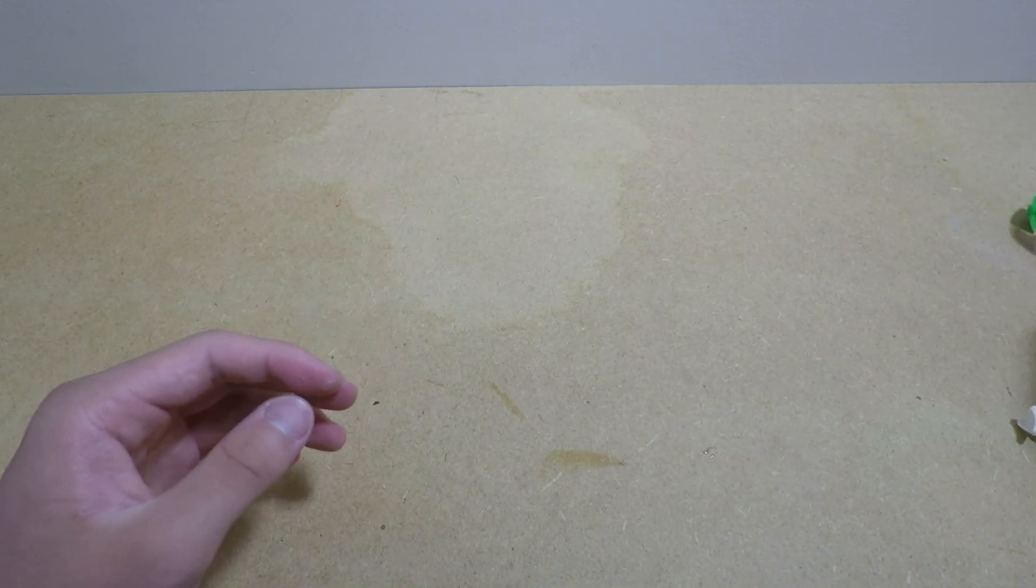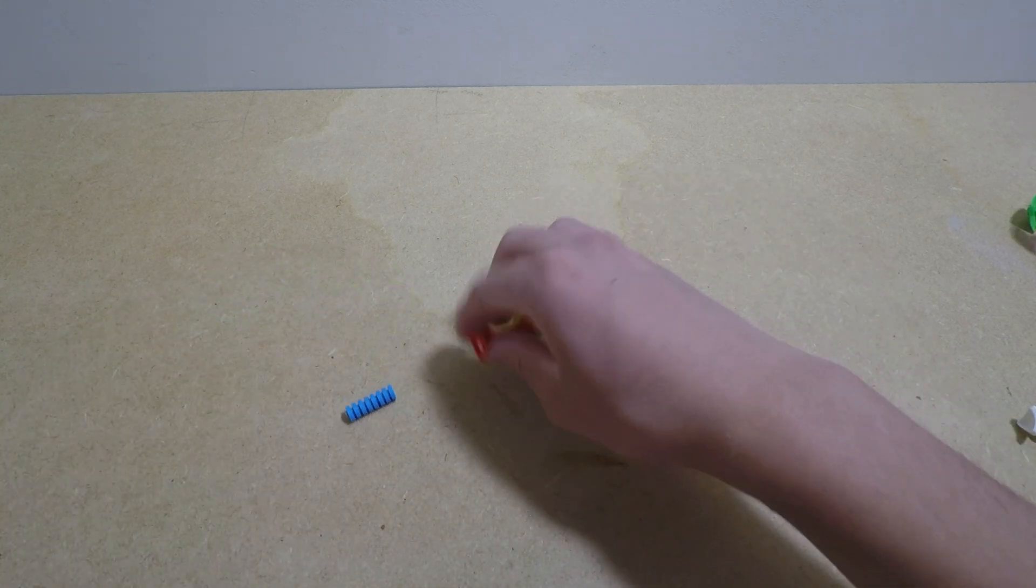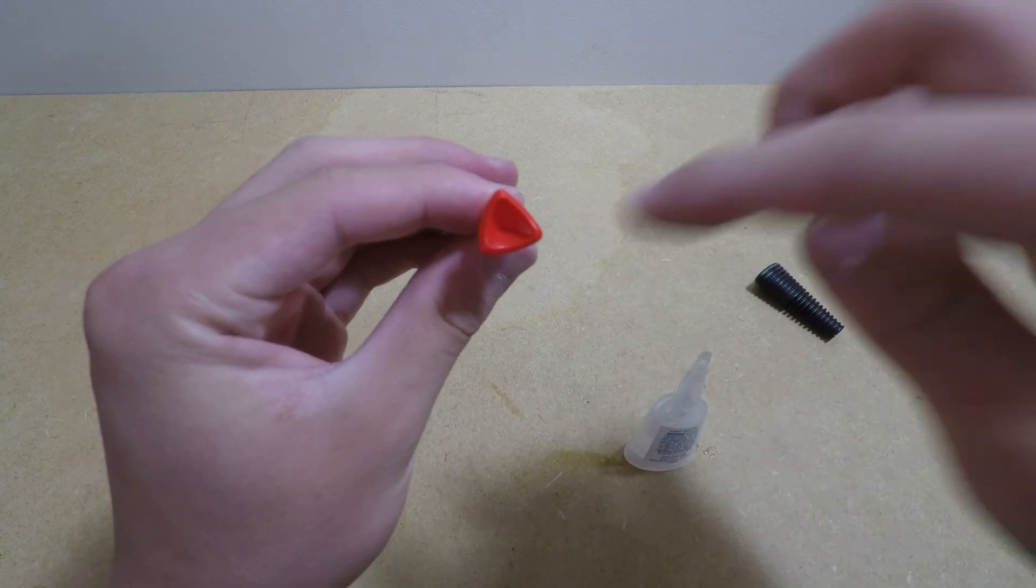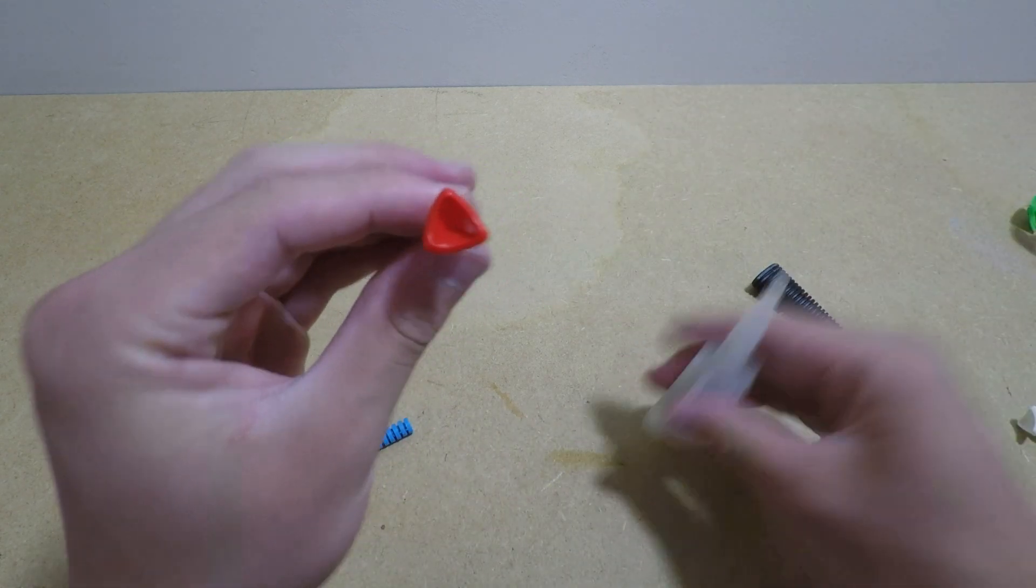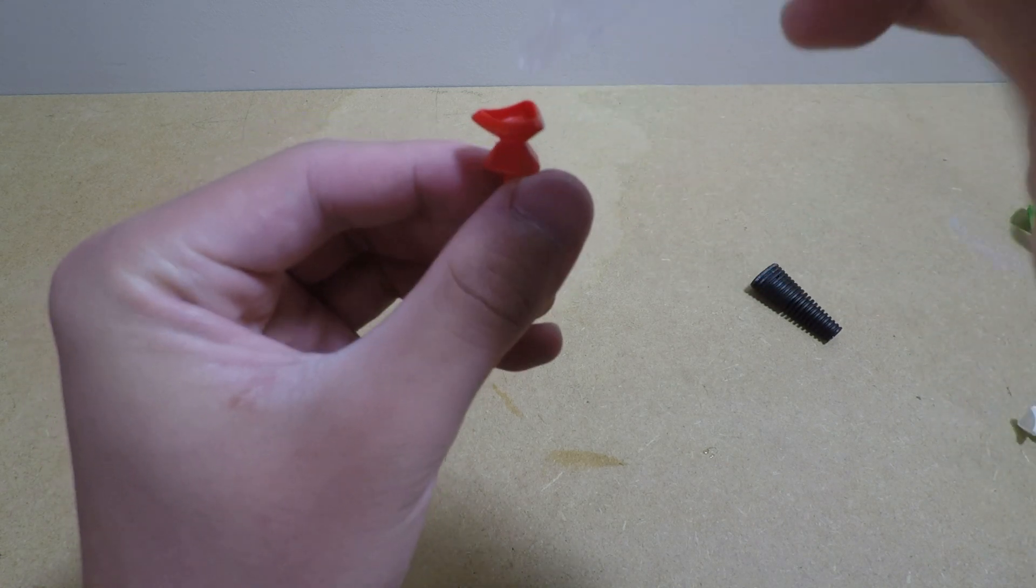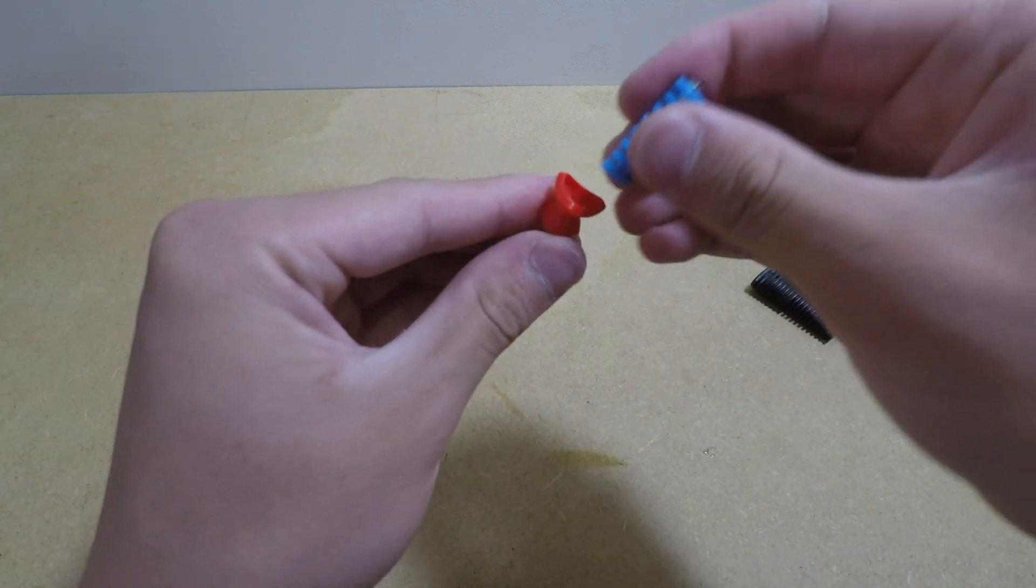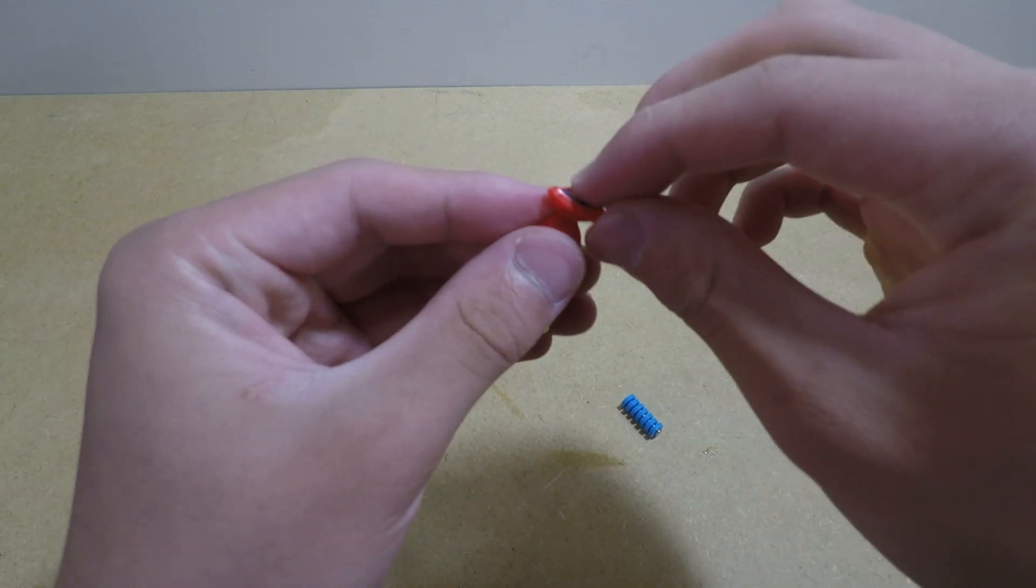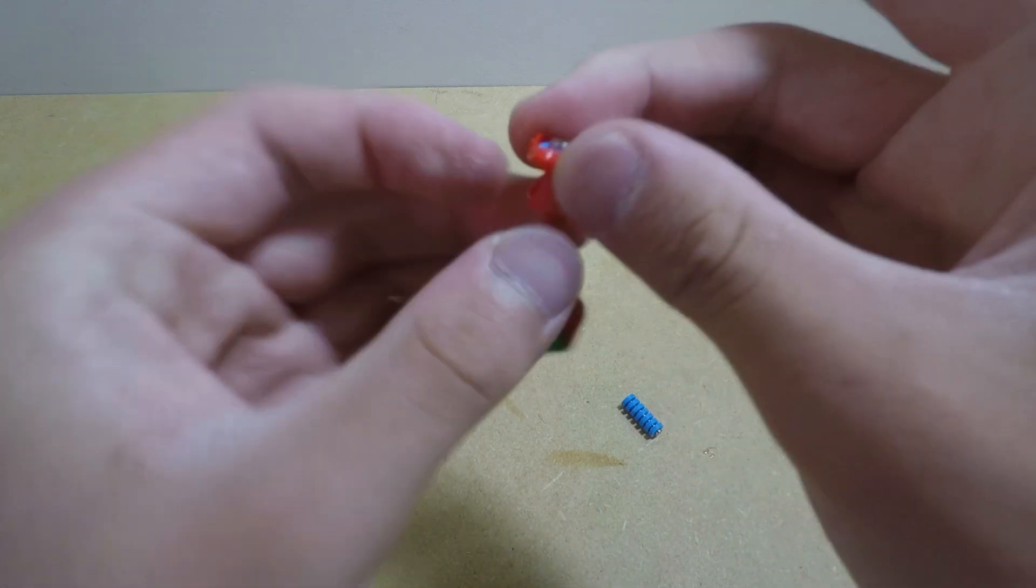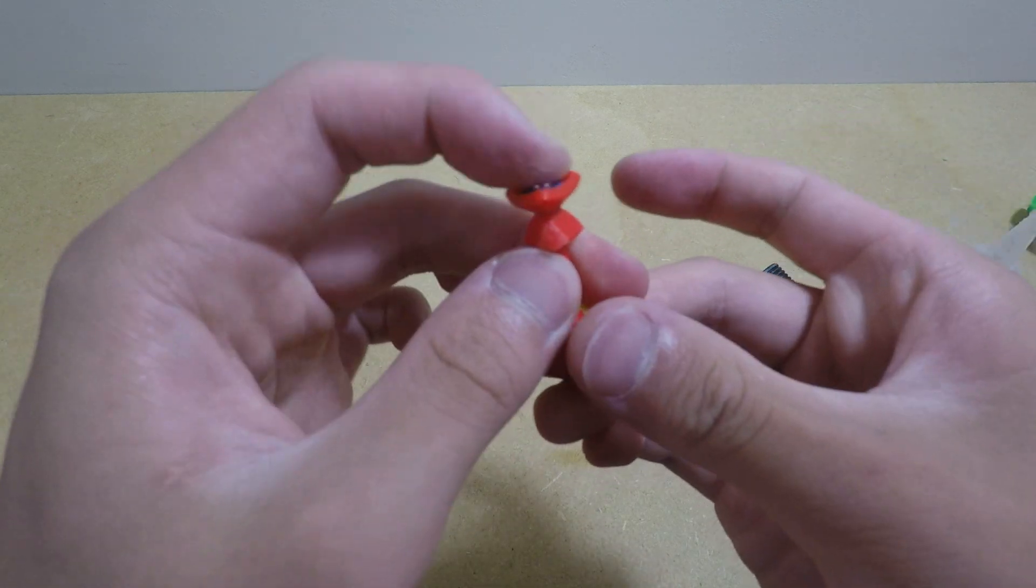So now finally we'll just add the corner magnets. So, these are pretty easy to add, basically. All you do is get some glue. I like to add it in three spots, here, here, and here, on the inside. So, one, two, three. You don't need that much. And then just get the magnet in and just hold it for a second. The glue dries pretty fast. Just make sure it's pushed down all the way. And yeah, that's it. Just had to do that for all eight now.